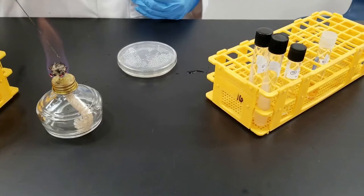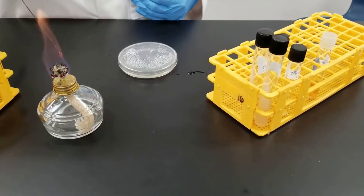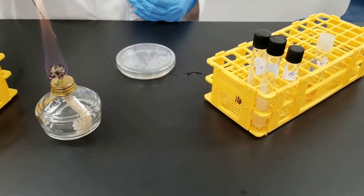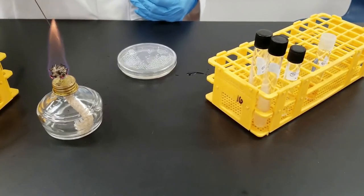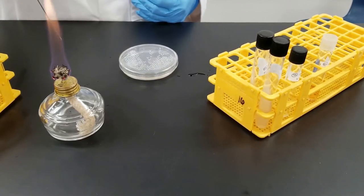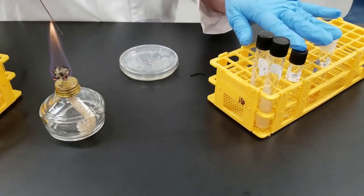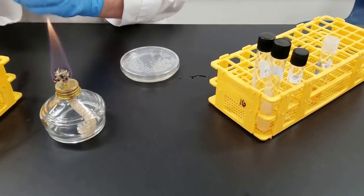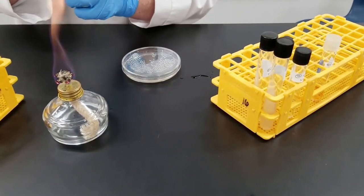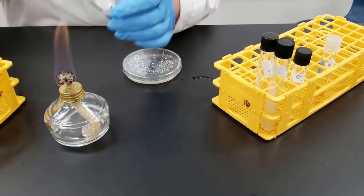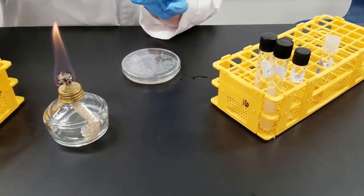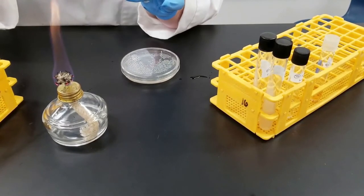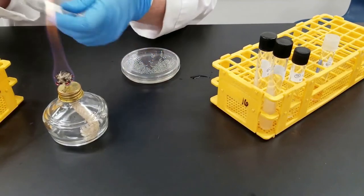So as usual, we need to sterilize our loop. And as I said, we are going from a liquid broth culture to a couple of broth cultures and also from the liquid to solid. So we're going to take a little bit of water. Always flame the tube. Dip your loop in.